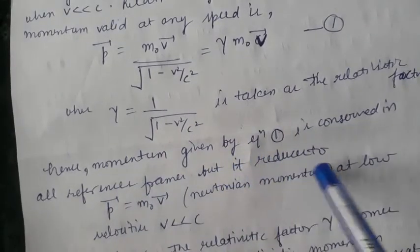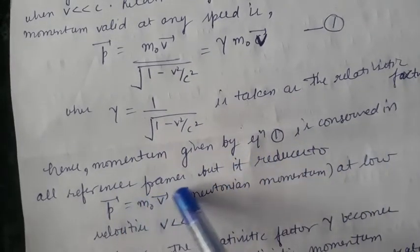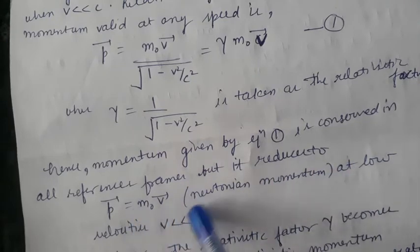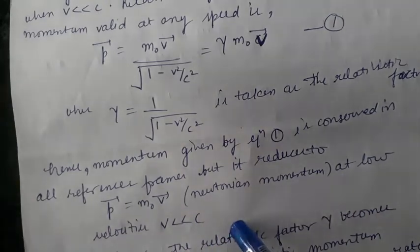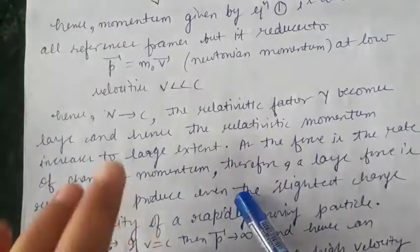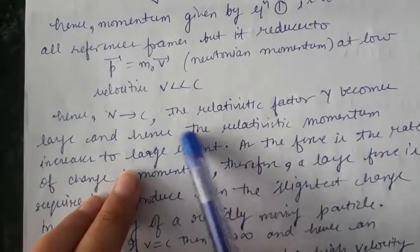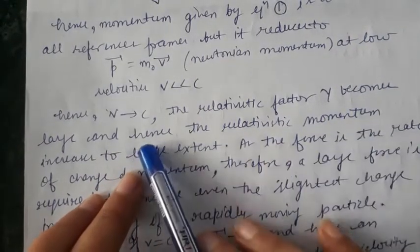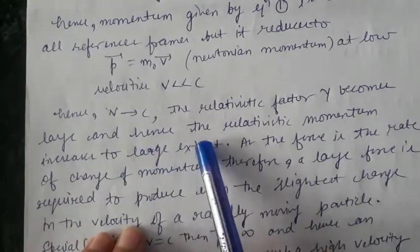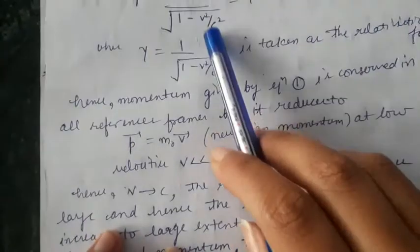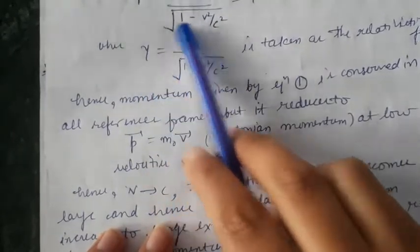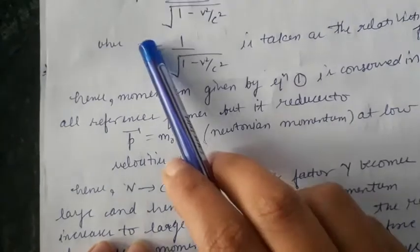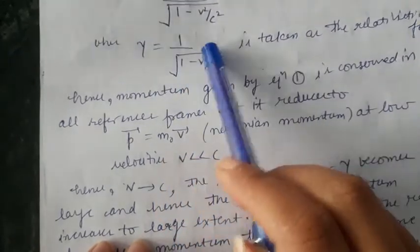Hence momentum given by equation 1 is conserved in all reference frames, and it reduces to the Newtonian momentum m₀v at low velocities where v is very much less than c. As v approaches c, the relativistic factor γ becomes very large — the denominator approaches 0, making γ approach infinity.